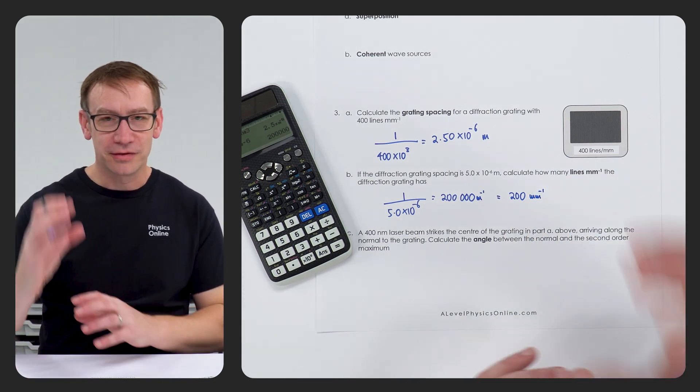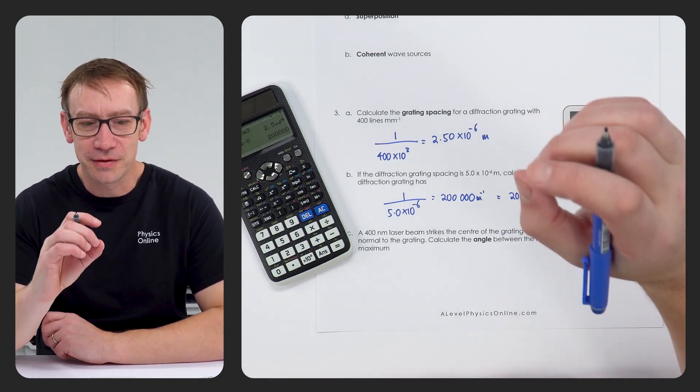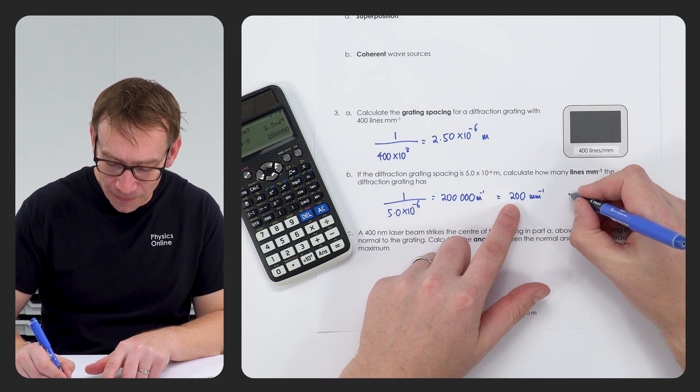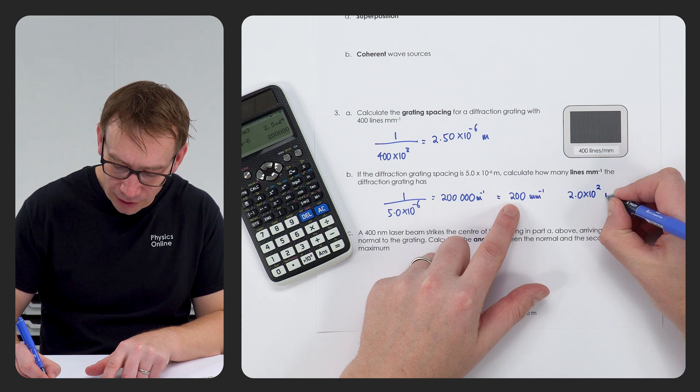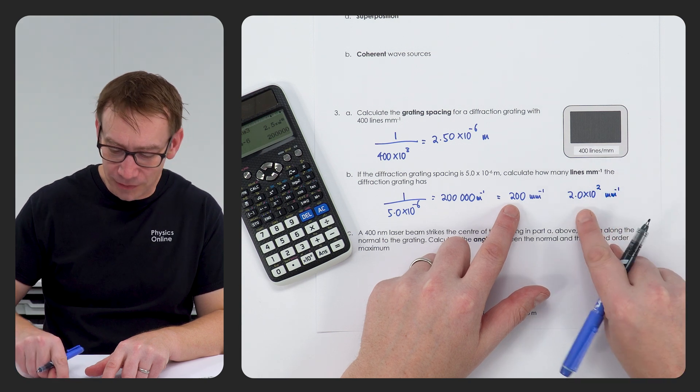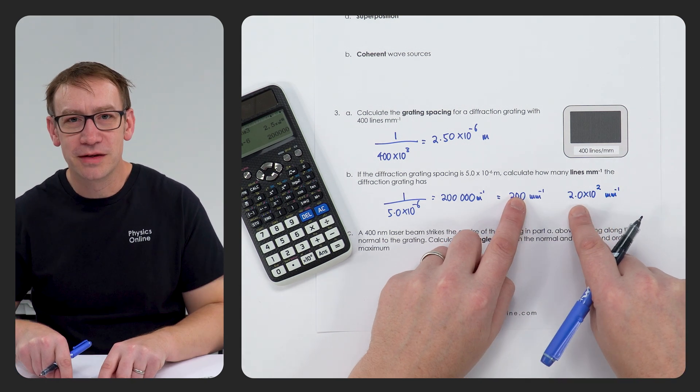And if you want to go down the same route of being really clear about your significant figures, we can also give this as 2.0 times 10 to the 2 lines per millimetre - that's just that number written to two significant figures.